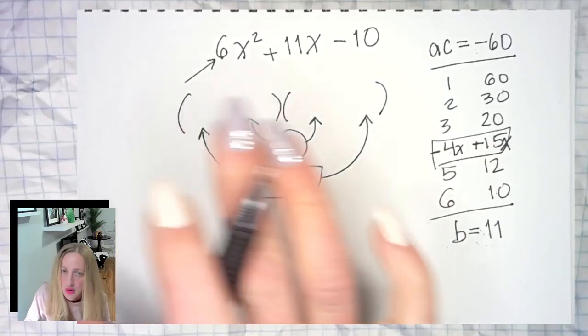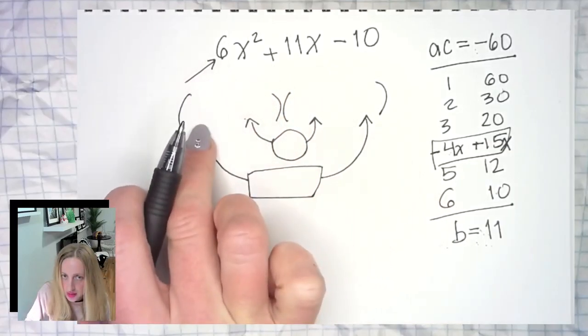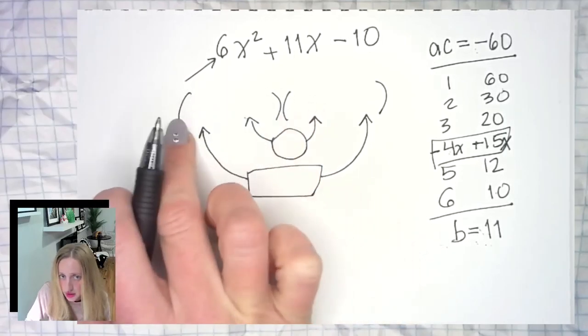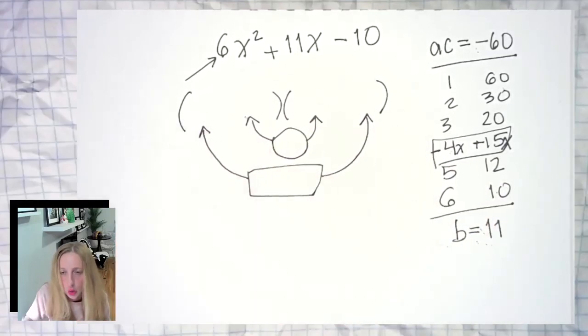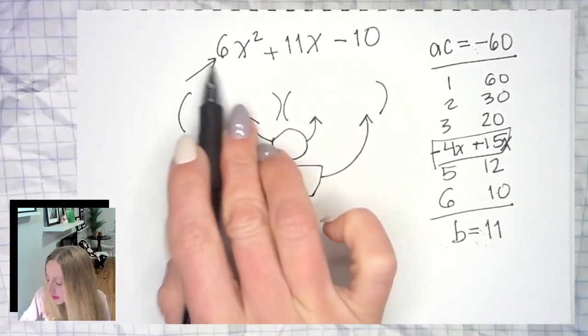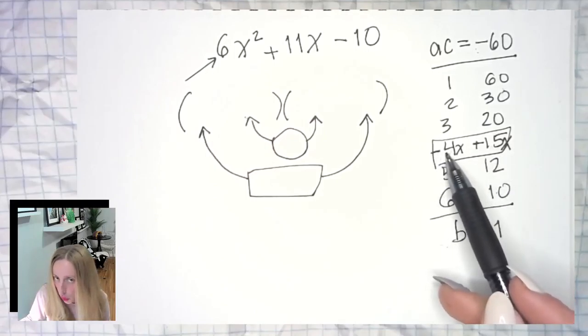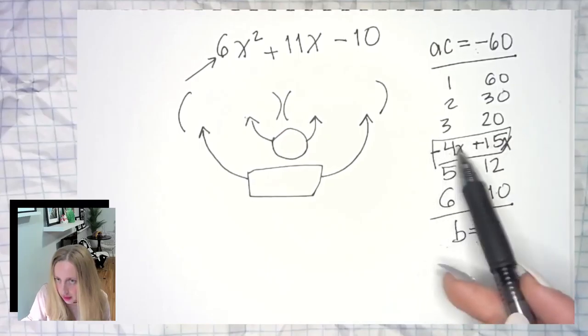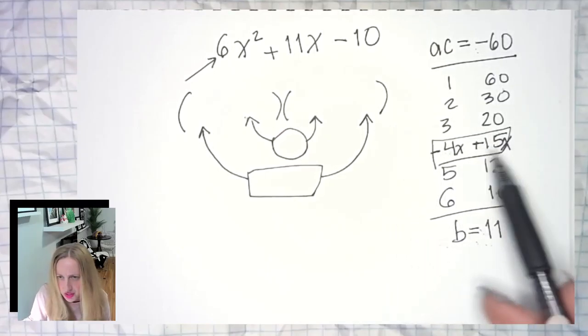Now this is the trickiest example because six could be six and one, or one and six, two and three, or three and two. We have a lot of options. So if we think about it though, it's not going to be six and one because I can't fit six into 15 or four. Six doesn't go into them. Nothing multiplies six times a cute number gives me four? No. Six times a cute number gives me 15? No. So I'm looking at two and three.